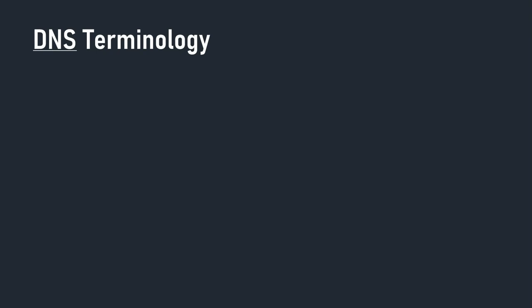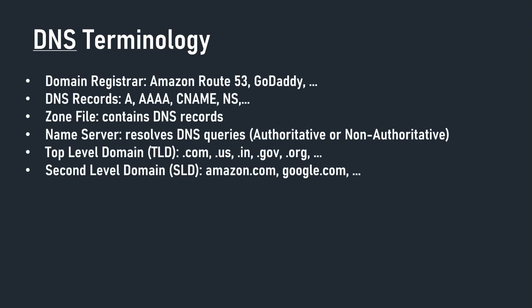We need to explain some terminology regarding DNS. There is a domain registrar — this is where you register your domain names, and it could be Amazon Route 53, GoDaddy, or any other domain registrar you can find online. Then you have DNS records, and there are different types we will look at in detail in this session — A, AAAA, CNAME, NS, etc. The zone file contains all the DNS records and shows how to match host names to IPs or addresses. Nameservers are servers that actually resolve the DNS queries.